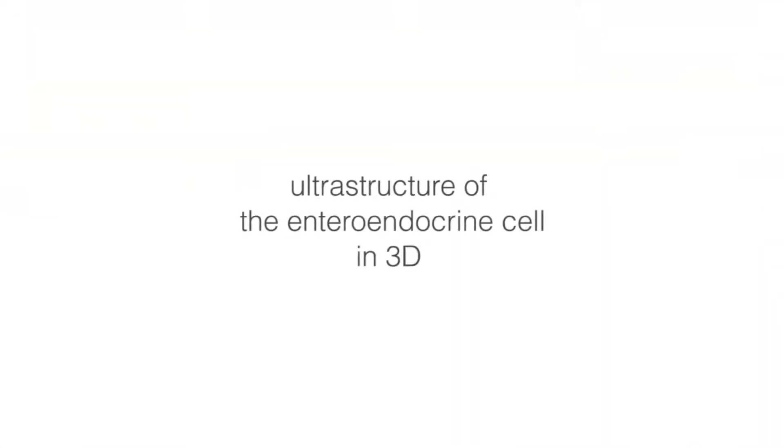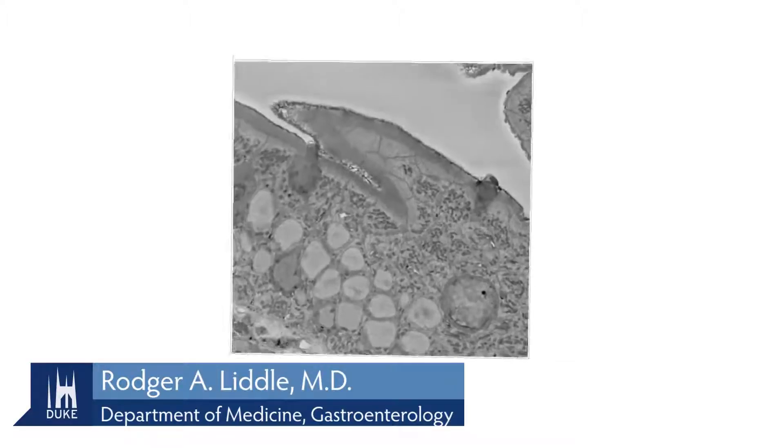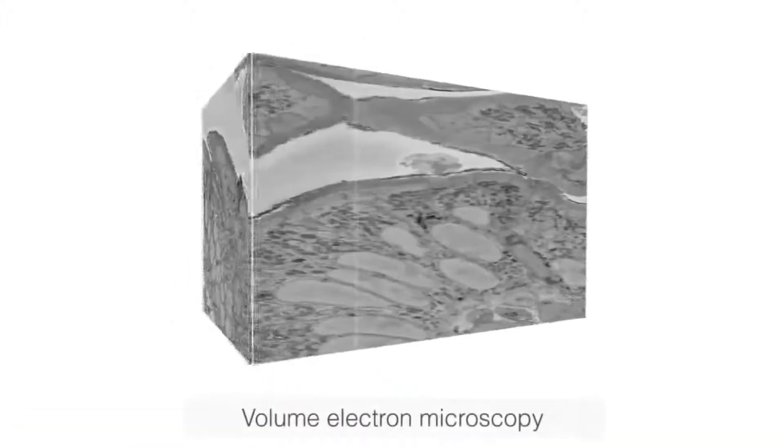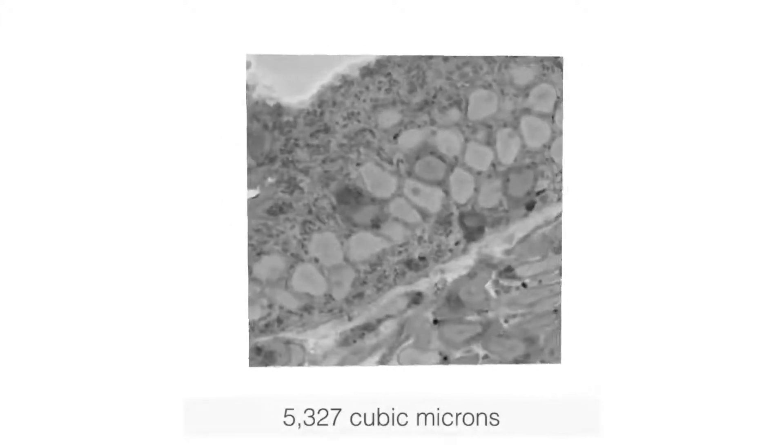The human gut is lined with cells that sense nutrients. These cells, when stimulated, release hormones that regulate appetite and tell us to eat less or to stop eating.